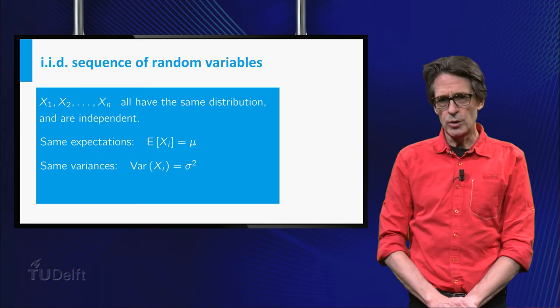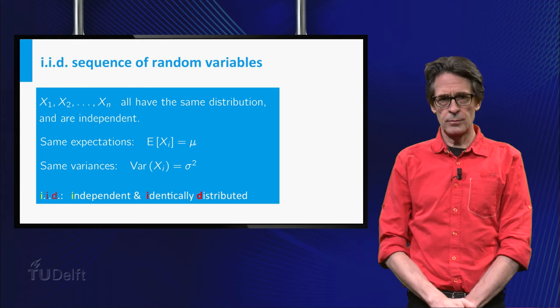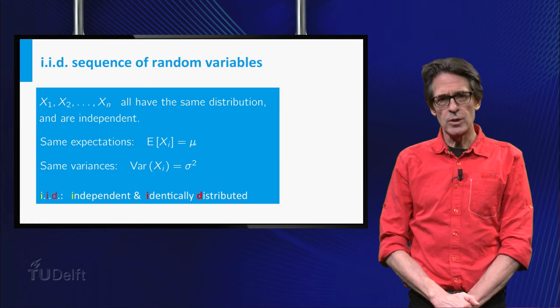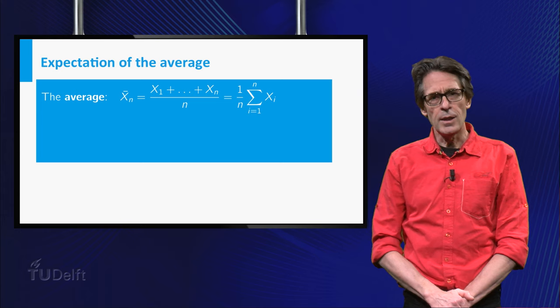For short, such a sequence is called an i.i.d. sequence. The average of the sequence is denoted by x̄ₙ, so x̄ₙ equals 1 over n times the sum.